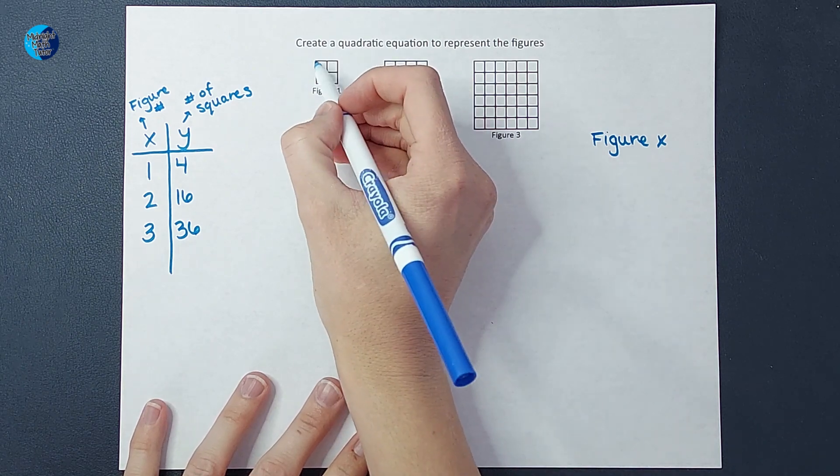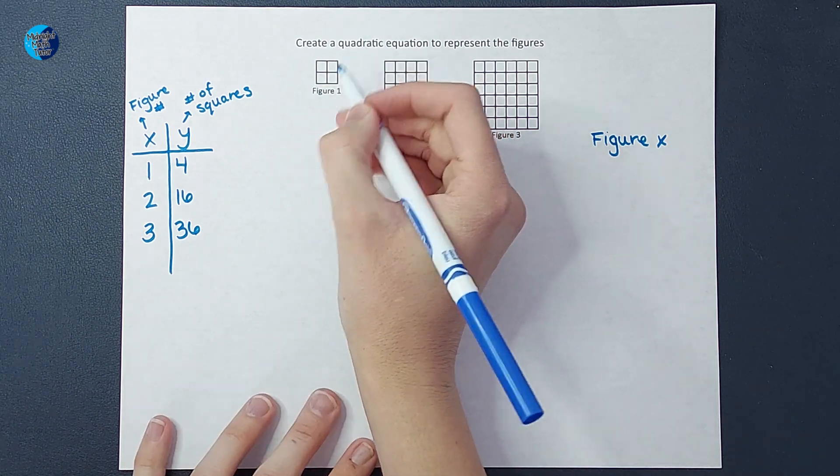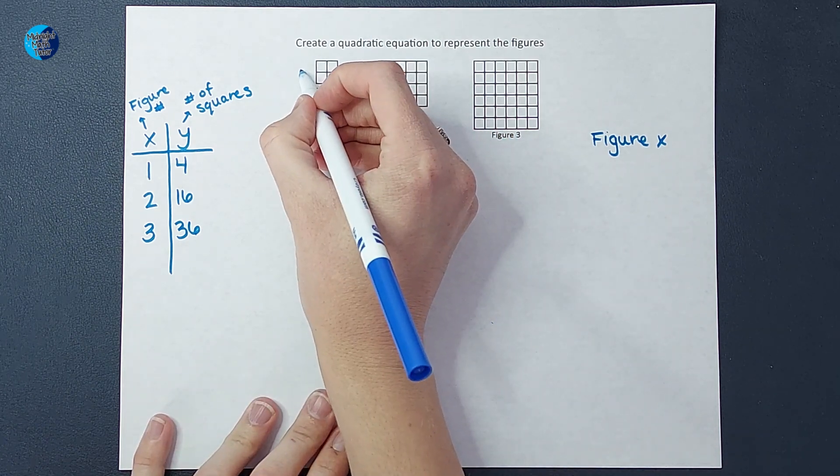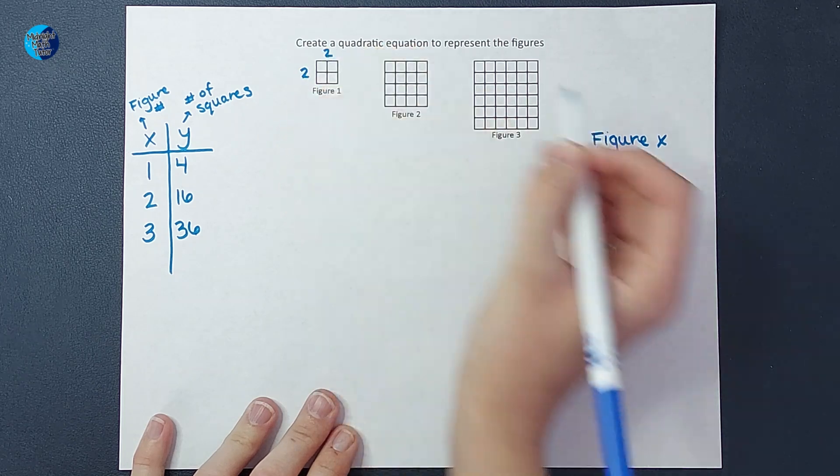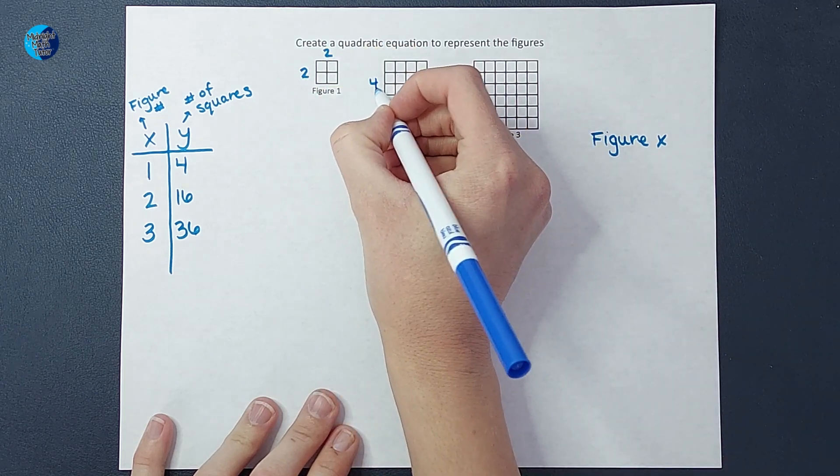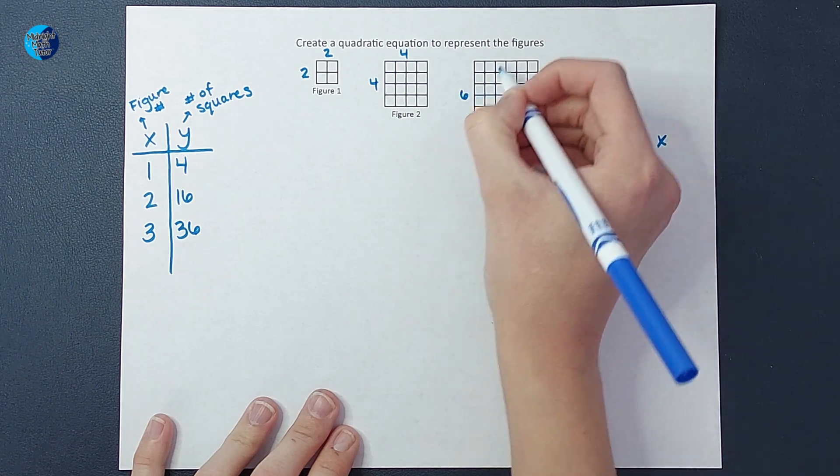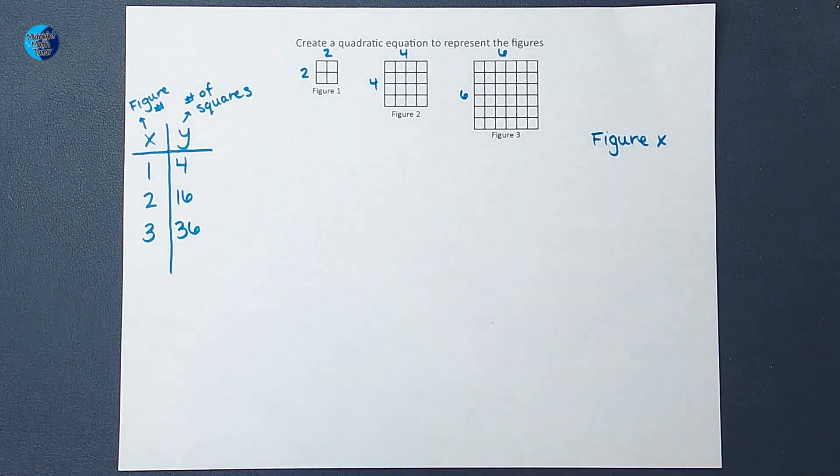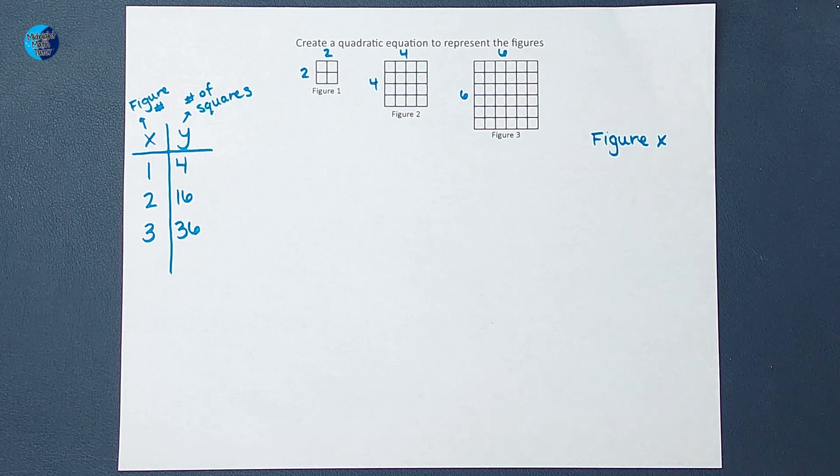So the next thing I'm going to do is label the dimensions here. This square is 2 by 2, this square is 4 by 4, this one is 6 by 6.